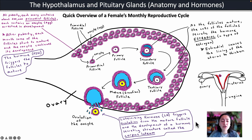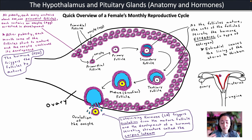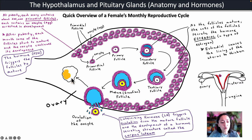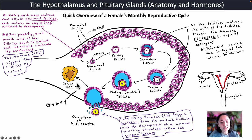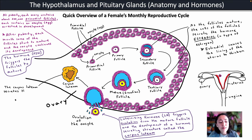Luteinizing hormone triggers ovulation from the mature follicle and also triggers the development of a hormone-secreting structure called the corpus luteum. Some follicle cells stay surrounding the oocyte as it's ovulated, but most stay behind. Before, they were producing estradiol, but now they change function and become the corpus luteum — this is why it's called luteinizing hormone, because it luteinizes the follicle cells into the corpus luteum. The corpus luteum secretes the hormone progesterone.